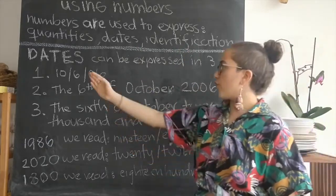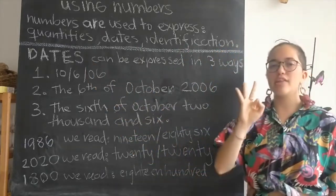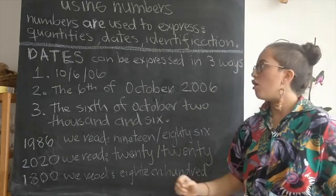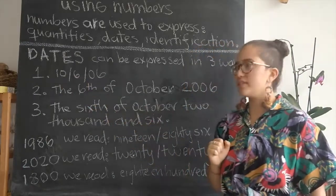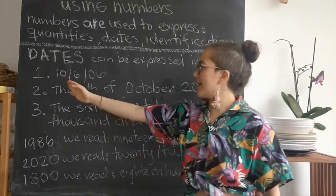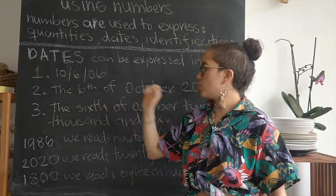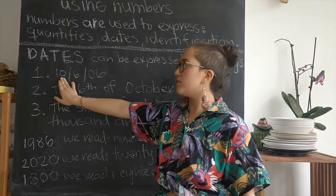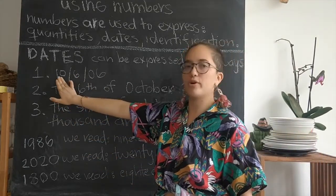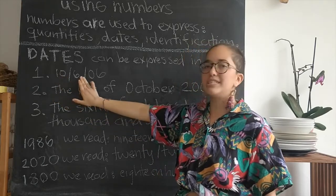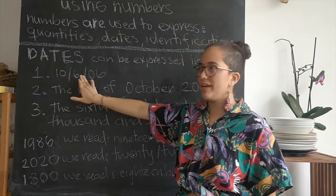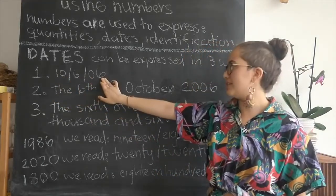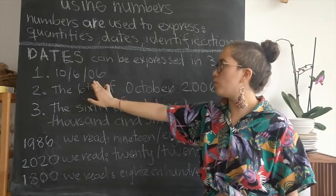Dates can be expressed in three different ways. First we would say the 10-6-06. So first we put the month, October 10th. Then we put the day, 6th. And then we put the year, 2006 — so 06.